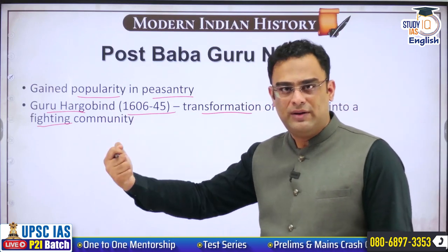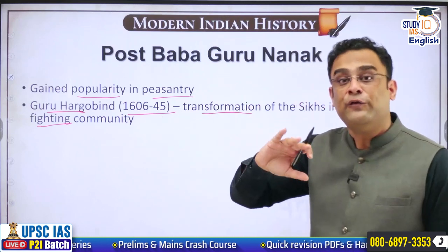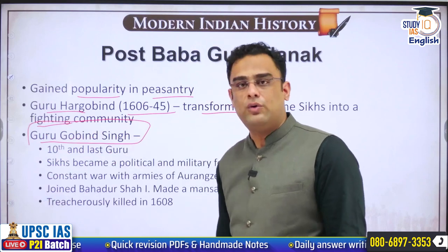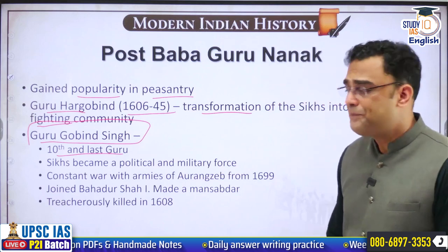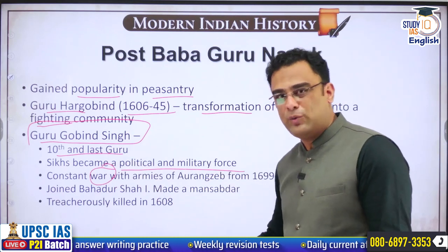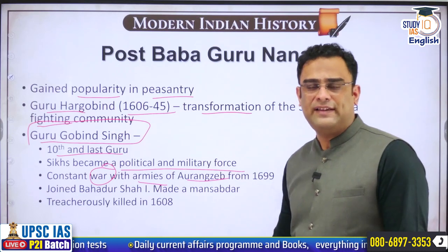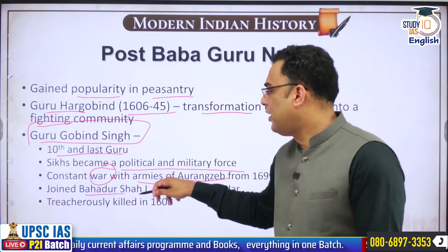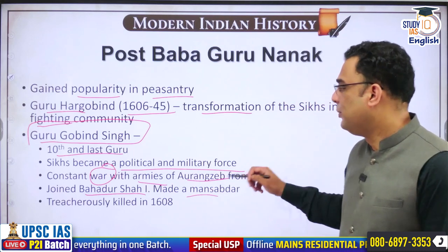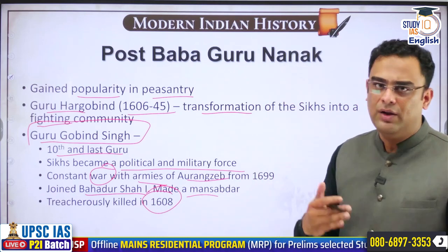Bahadur Shah also inducted Guru Gobind Singh into the Mansabdari system of the Mughals, but this bonhommie was brief. Immediately after, he was treacherously killed in 1708, and this led to a start of a long period of conflict between the Mughals and the Sikhs. With the assassination of Guru Gobind Singh in a treacherous manner, things reached a very different level. The institution of Guruship ended with him in human form — he was the tenth and last Guru. After that, Guru Granth Sahib was supposed to be considered as the Guru by the Sikhs.